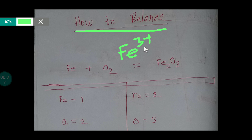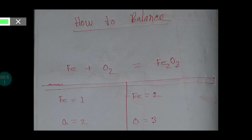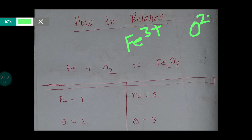We always know that the charge of oxygen — oxide — is 2 minus. So if we write ferric iron and oxide together, the positive charge is 3+ and the negative charge is 2 minus. To equalize the charges, we take 2 iron atoms.